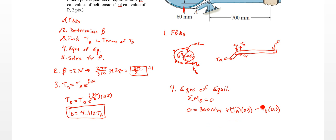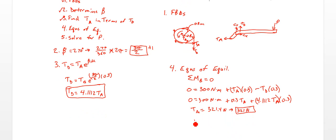Minus TD times 0.3. And we have TA in terms of TD or TD in terms of TA. So I'll substitute that in. 300 newton-meters plus 0.3 TA plus 4.1112 TA times 0.3. So we can solve that. We find that TA equals 321.4 newtons, or 321 newtons to three figures.